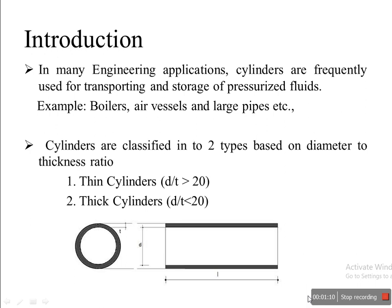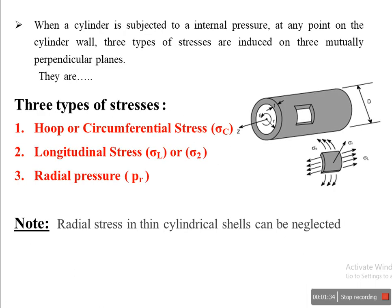These thin-walled pressure cylinders are closed containers that hold pressurized fluids inside. In this case, the thickness of the cylinder is very small compared to the diameter. When the cylinders are subjected to internal fluid pressure, stresses are developed in the cylindrical shell — those stresses are called hoop stresses, longitudinal stresses, and radial stresses.